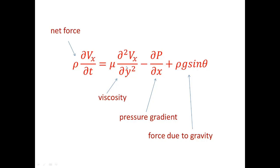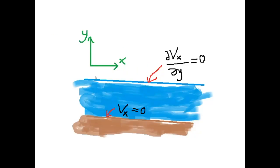As you can see, this is a second order differential equation. To solve this, we will have to impose two boundary conditions. For the river problem, we will consider the velocity at the bottom of the river to be zero. This is true because the river bed imposes resistance to the fluid layer just above it, preventing its motion.